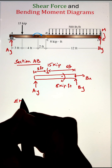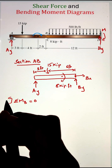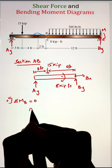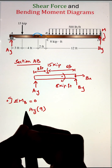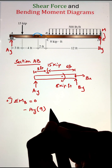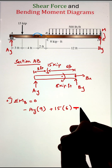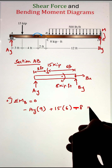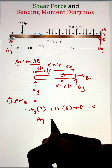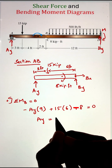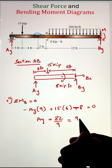To solve for AY, we write the equilibrium condition — summation of moments at point B equals zero. Force AY creates a clockwise moment, hence negative. The 15 kilopound force creates a counterclockwise moment with a moment arm of 6. The couple moment is clockwise, so negative 8. Solving gives AY equal to 9.11 kilopounds.